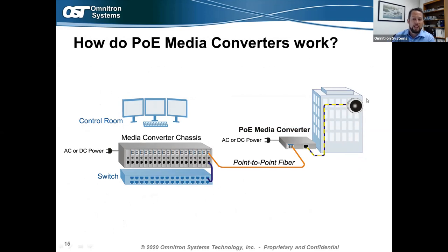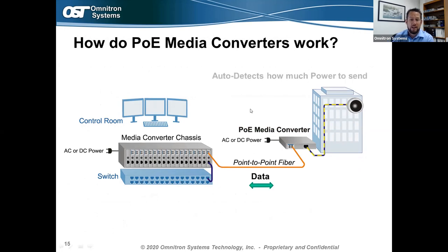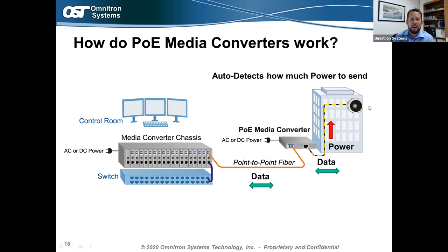How does a PoE media converter work? Data is sent from a central control room out to the edge of the building where a camera is installed — typically there's no power outlet there. Data is sent over a point-to-point fiber link to a PoE media converter, which auto-detects how much power to send to the camera. It then provides both data and PoE power over that same Cat5/Cat6 cable, making camera installation easy without additional electrical outlets.